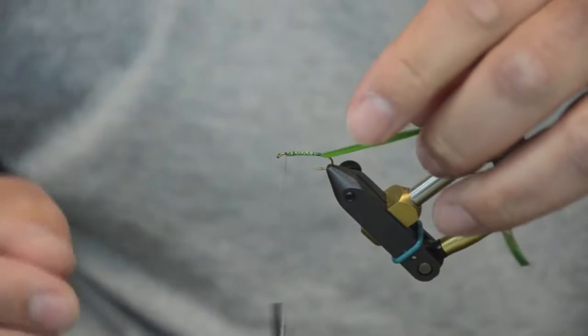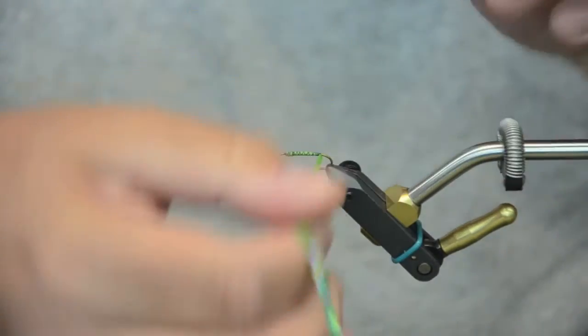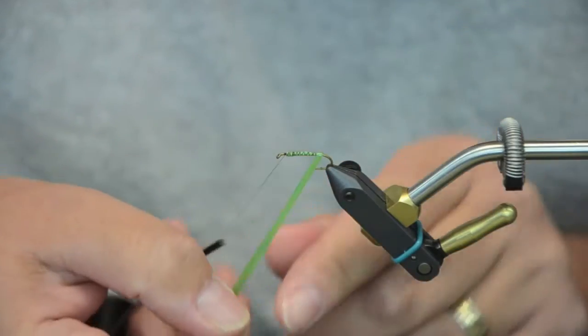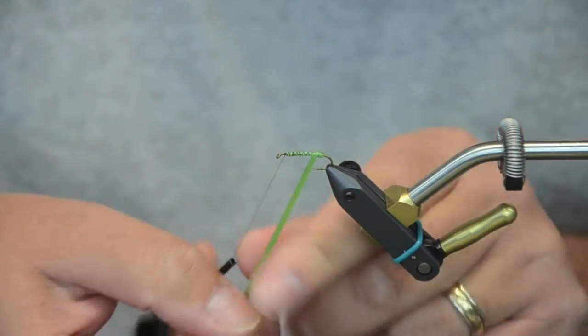Now if you want to weight this fly down and really get it down deep and then do the Caddis crawl as you lift it off the bottom, you can do that by putting some lead under this.